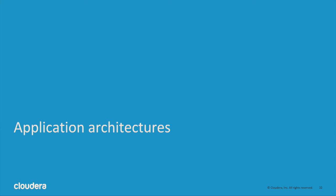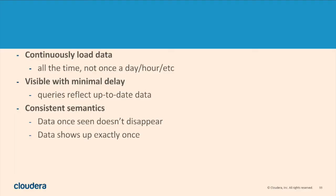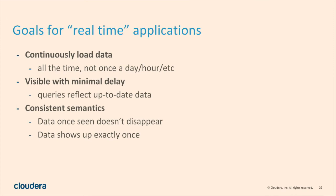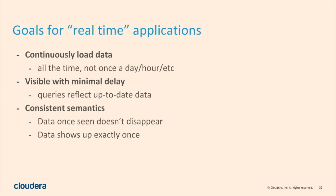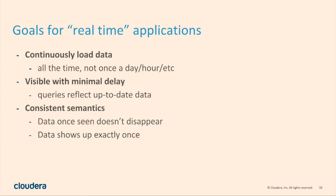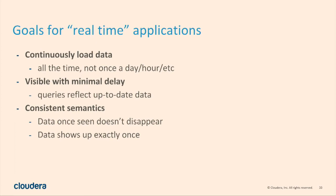To wrap up, let's talk about application architectures. Real-time applications have three important characteristics: they continuously load data — not a once-a-day load window, but streaming from something like Kafka or Flume all the time. As data arrives, it should be visible with minimal delay — you can query data that arrived one second or one millisecond ago. And you want consistent semantics — you don't want data to appear in one query and disappear in the next. These sound obvious but are very hard to engineer on traditional Hadoop.